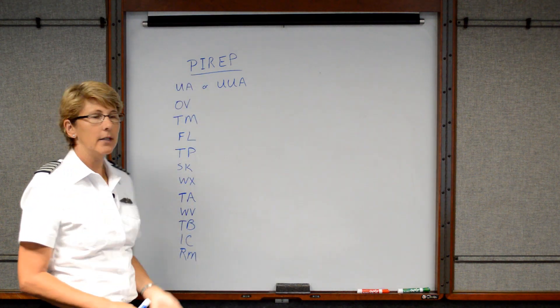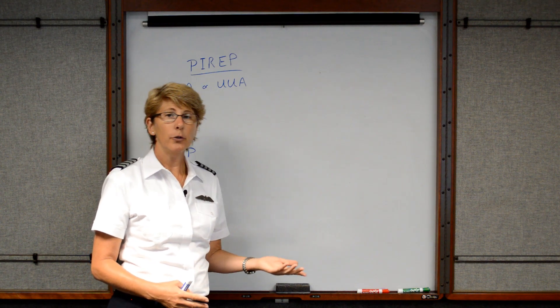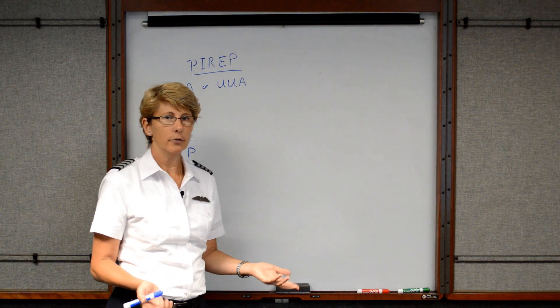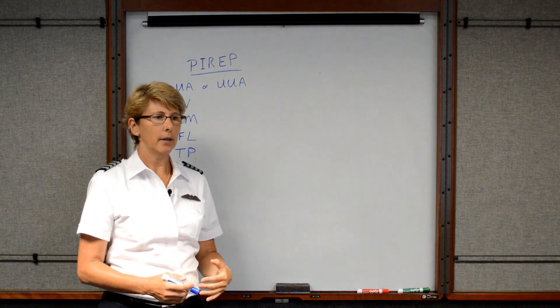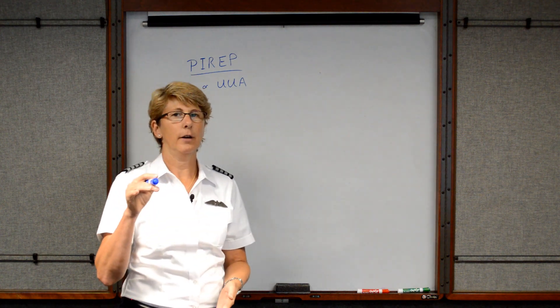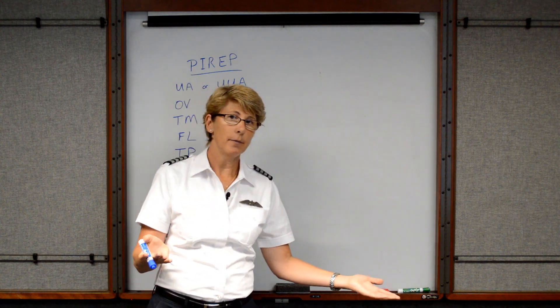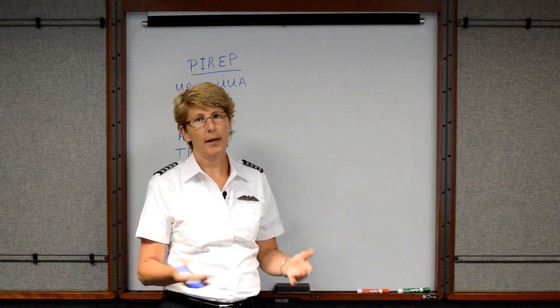SK stands for the sky condition, so that would be like maybe you note that it appears to be few clouds at around 7,000 feet. And then WX is going to be weather, so that would be like the visibility. Say you're flying along at 5,500 and you judge that you could see about seven miles or maybe only three miles due to smoke or haze. You can report that.